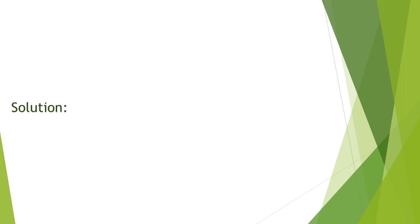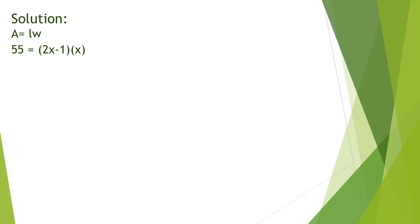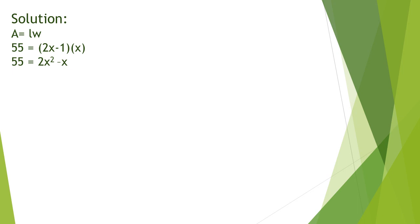For the solution, remember that area equals length times width. The area is 55, the length is 2x minus 1, and the width is x. Distributing x to 2x minus 1 gives 55 equals 2x squared minus x. Using the subtraction property of equality to move 55 to the right side, the new equation becomes 0 equals 2x squared minus x minus 55.